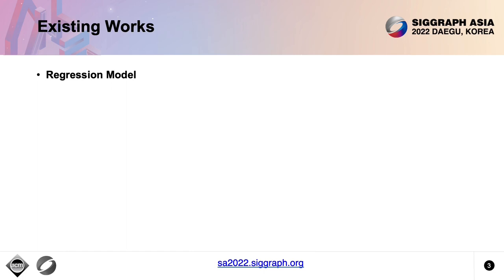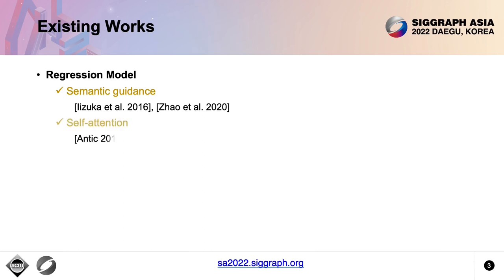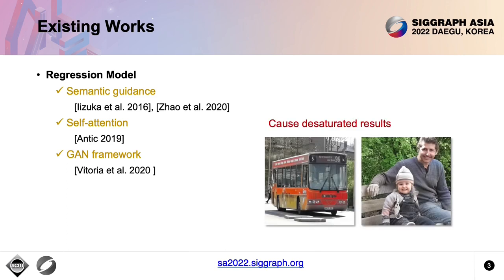To tackle this problem, existing works fall into three categories. Early attempts formulate image colorization as a regression task. Some follow-ups propose using explicit semantics to guide color prediction. Advanced network designs like self-attention and GAN are also employed to promote performance. However, these methods still fail to bypass the barrier of color ambiguity and tend to cause desaturated results, because regression models cannot handle multimodal problems.